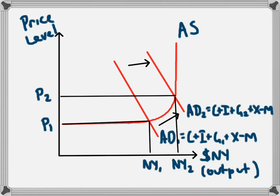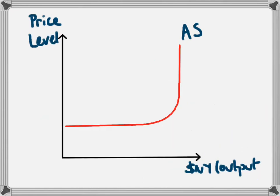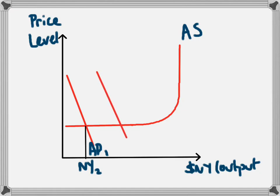It could be possible that the economy is operating in one of the other levels of the aggregate supply curve. For example, if we're at a very low level of aggregate demand and this was AD1, that would give us a national income level of NY1. At this very low level of national income, if there was an increase in aggregate demand, businesses would be willing to increase their output, and so output would improve from NY1 to NY2.